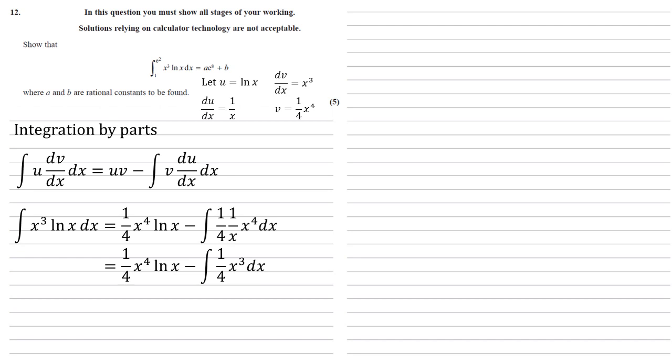So we've now simplified this down to a quarter x to the power of four ln x minus the integral of a quarter x cubed dx. So what we need to do is integrate this a quarter x cubed. We're going to raise the power by one, divide by the new power. So that becomes a sixteenth x to the power of four. And as we haven't got our bounds on at the minute, it's just an indefinite integral, so put the plus c on the end.